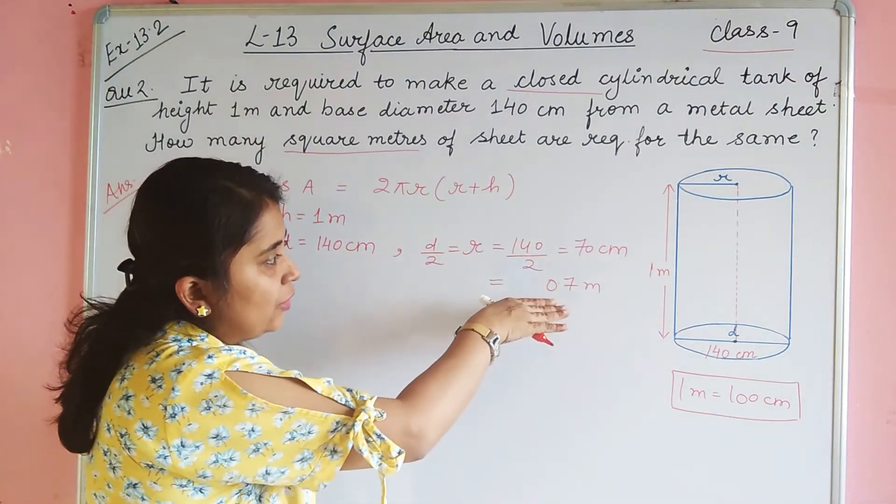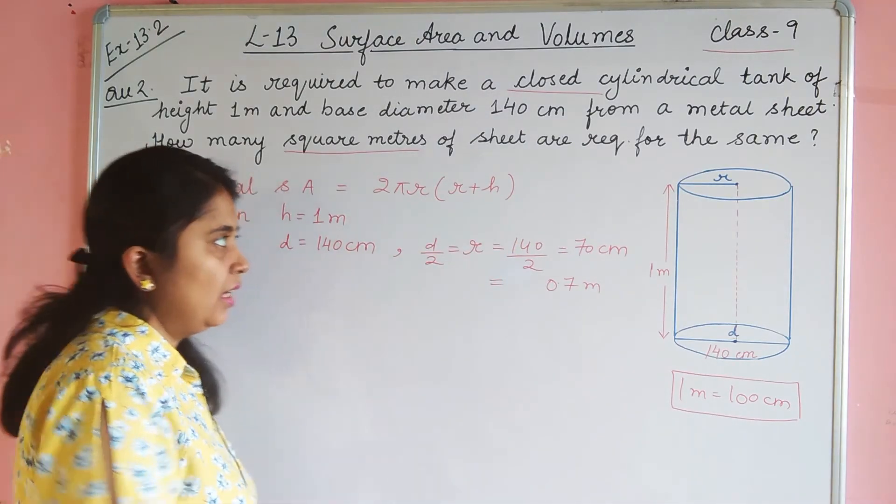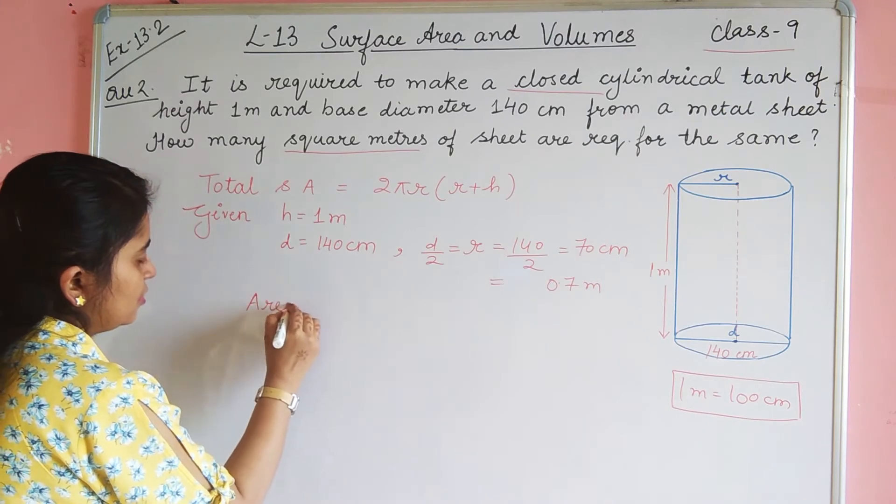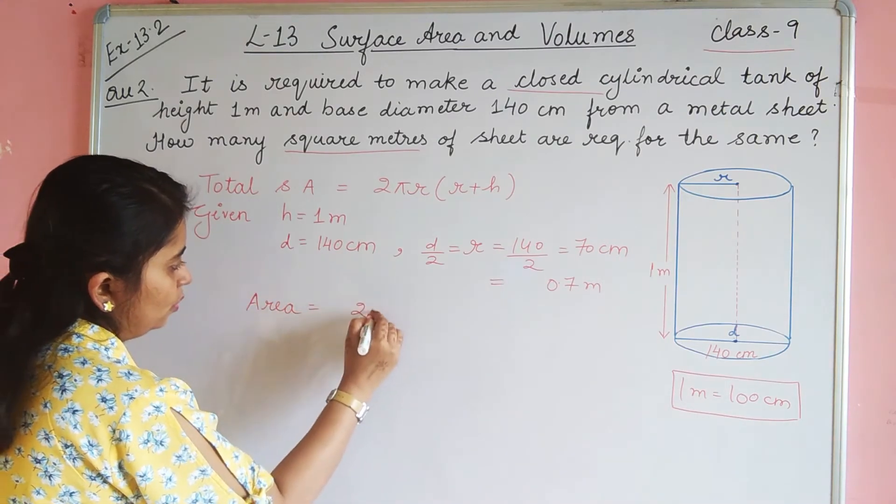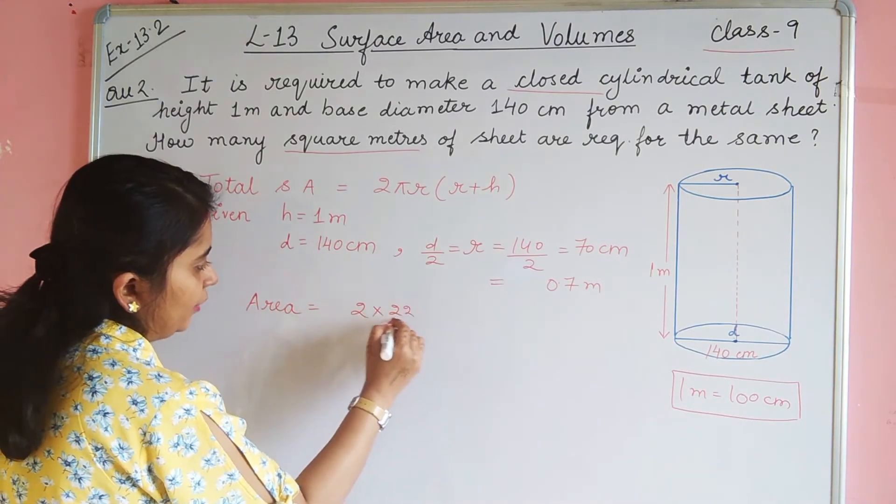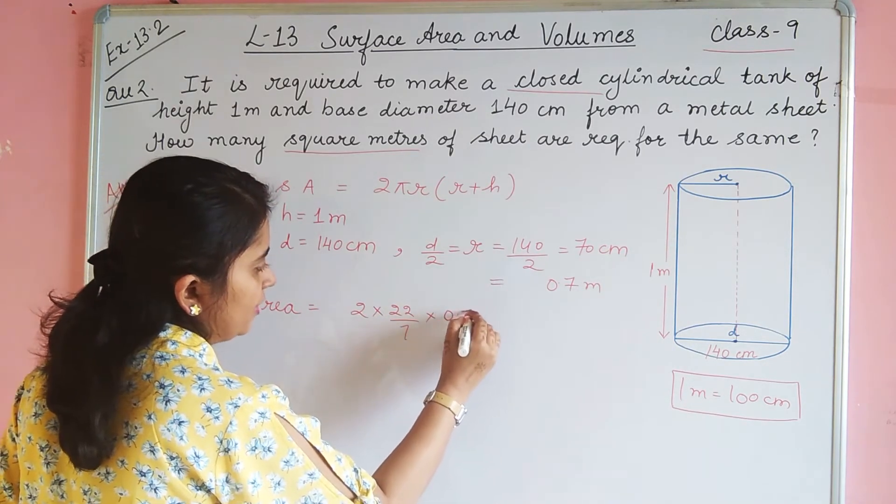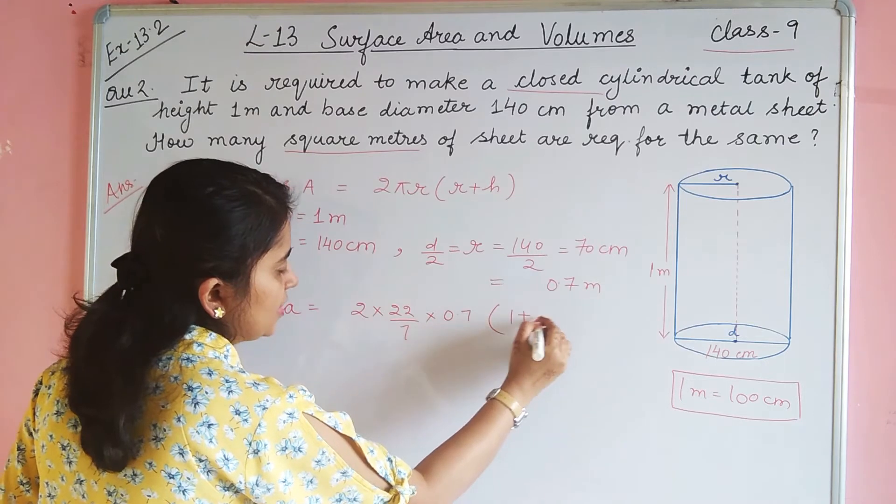Now the values are H and R, so area is 2π, R is 0.7, 1 plus 0.7.